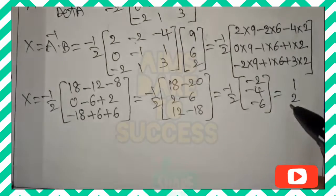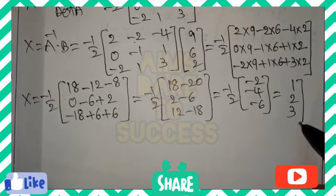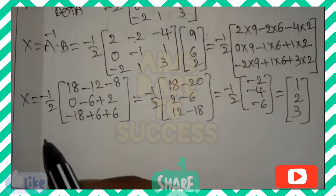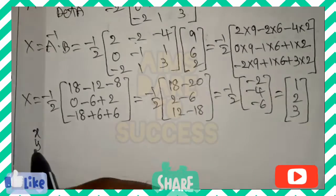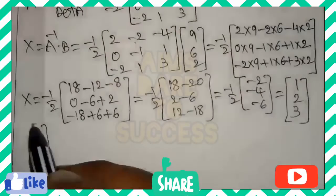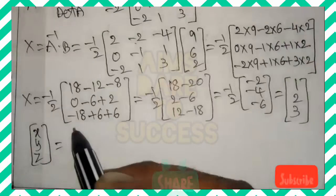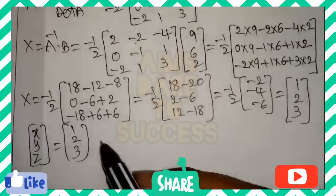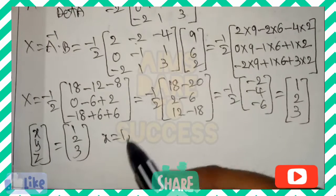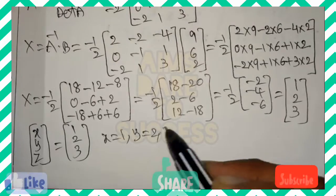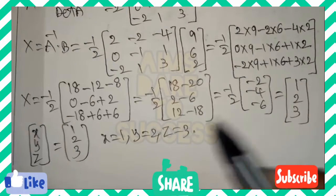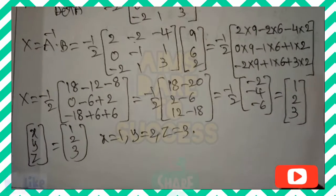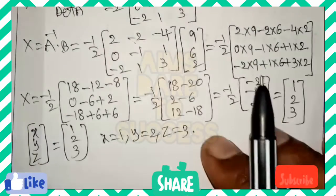So (−1/2) × [−2, −4, −6] gives [1, 2, 3]. Capital X contains small x, y, z in column form, so small x equals 1, small y equals 2, small z equals 3. This is the required answer. I hope you understand, my dear students.